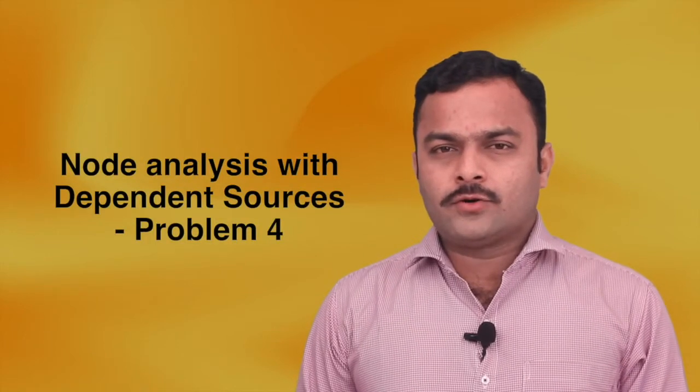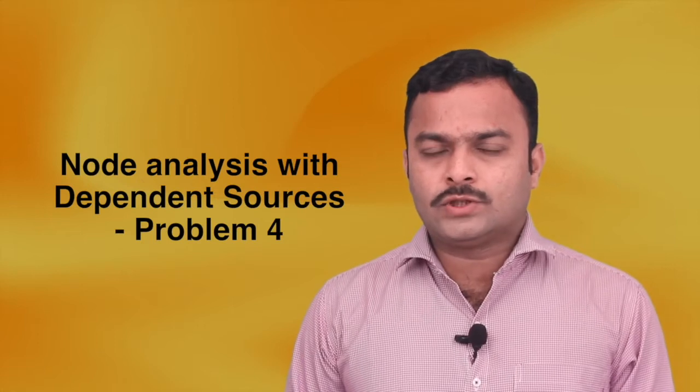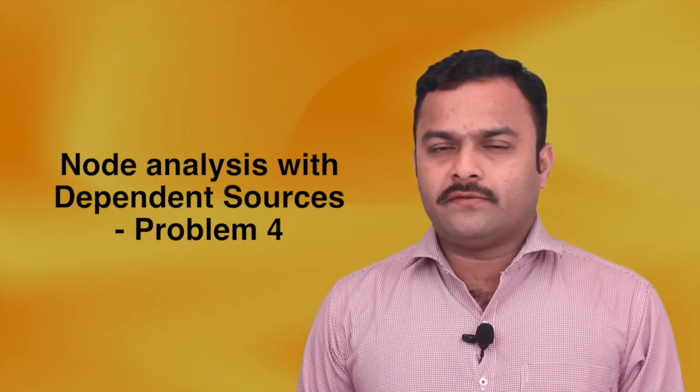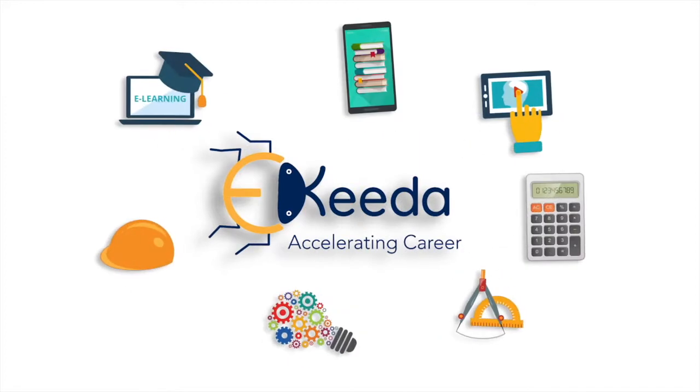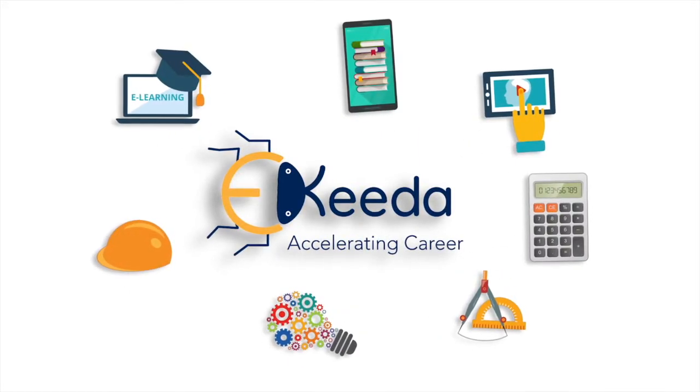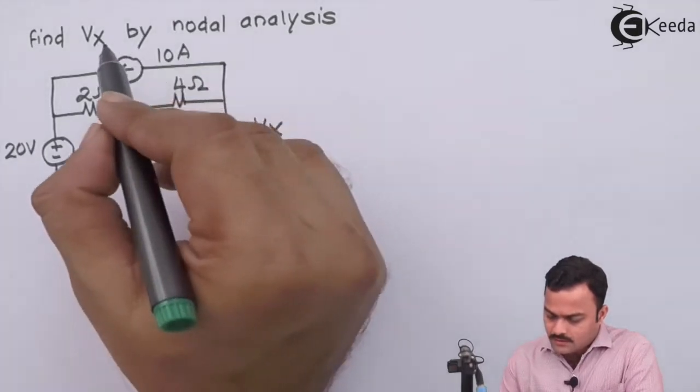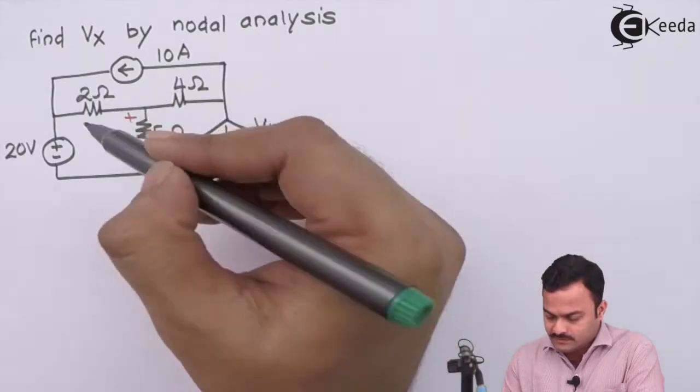In this video we are going to see how to apply nodal analysis through KCL in a circuit with a combination of dependent and independent sources. Here we have to get a voltage Vx by nodal analysis, which is marked over here.